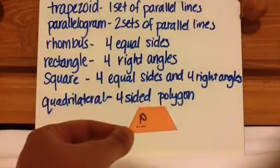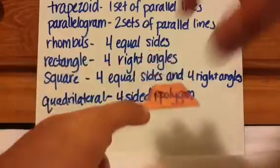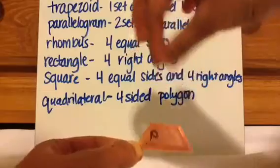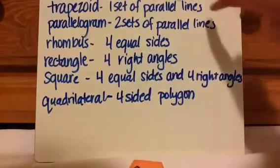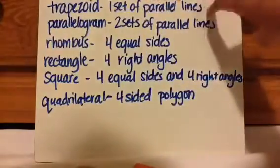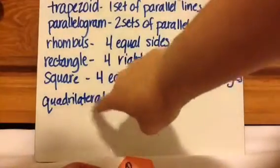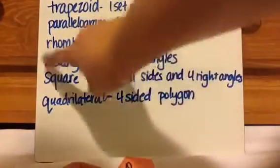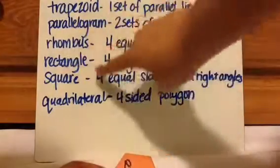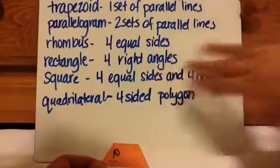Here's the next one. Looking at this, I see that these are parallel, but then these are not — they're going to touch. So it's one set of parallel lines, making it a trapezoid. And honestly, if you just find out that it's a trapezoid, then it can't be any of the others. Well, it can be a quadrilateral — it's also called a quadrilateral. But if it's a trapezoid, then it's also just a quadrilateral, and that's it.